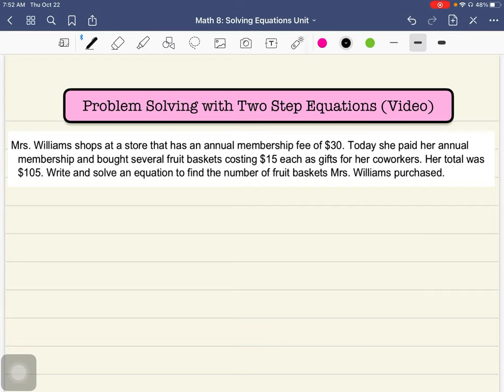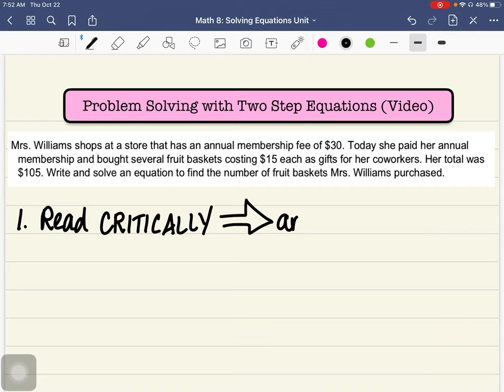So the first thing we want to do when we see just a bunch of word soup like this is we always want to read critically and carefully and annotate when we can. So we want to annotate where we can using different color pens, pencils, highlighters. What we don't want to do is underline and highlight everything because then it just doesn't mean anything.